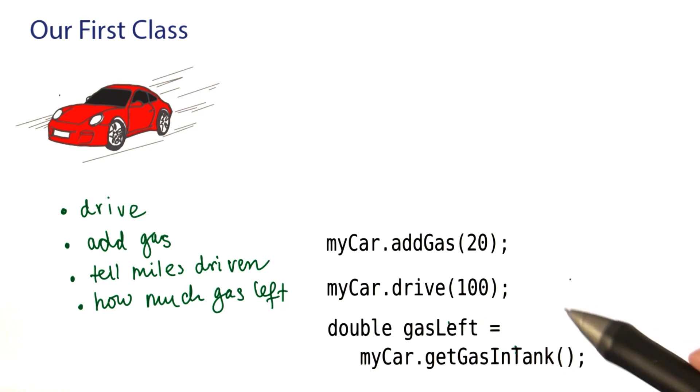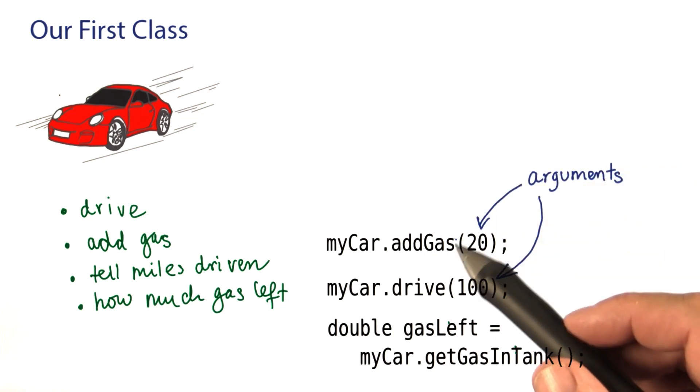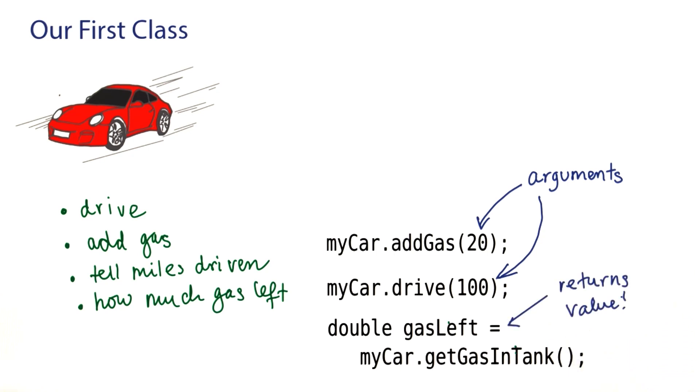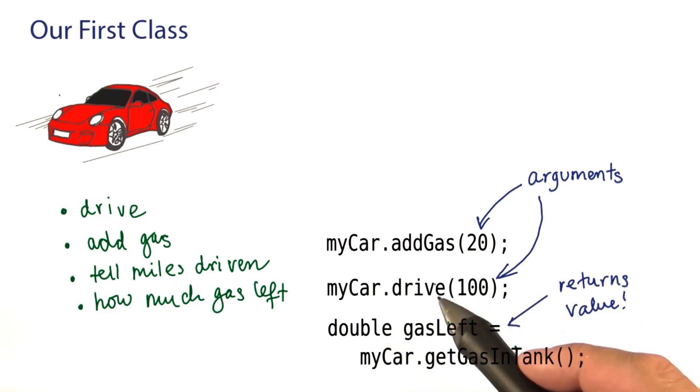Well, what's the point? I now have more information. I can see that these two methods take arguments, and this one doesn't. And I can see that this method here returns a value, and that's actually a number, and these two don't.